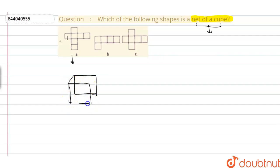not the desirable net of a cube, so we have to reject this option. Now let us switch on to this one. When we are drawing the figure with this shape, actually we are getting a hollow cube.